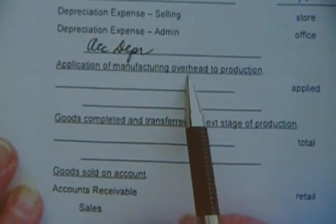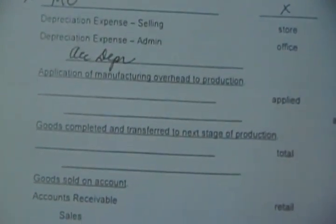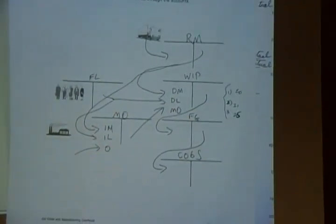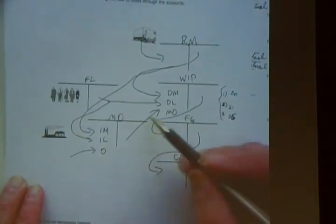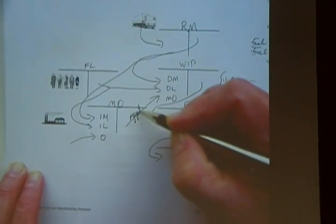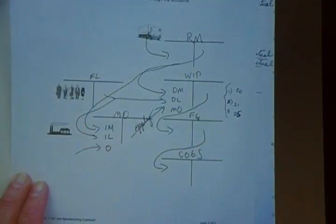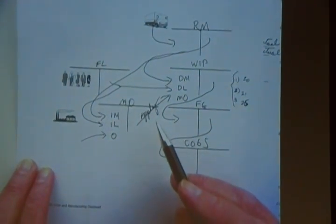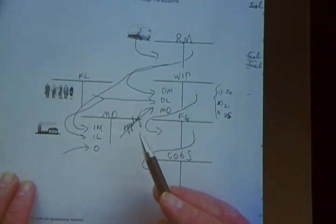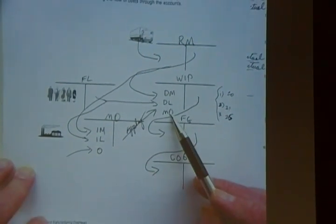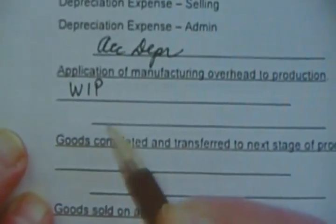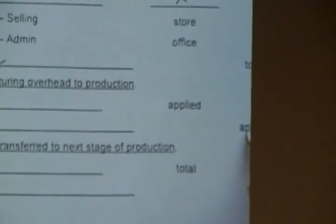Applied overhead to production — the applied amount. Where on earth was that on the original document? All the previous entries were actual, actual, actual, but this branch right here was the estimate. We're going to apply overhead to production — it's an estimate. Debit work in process, credit manufacturing overhead. How much? The estimate — it's different.